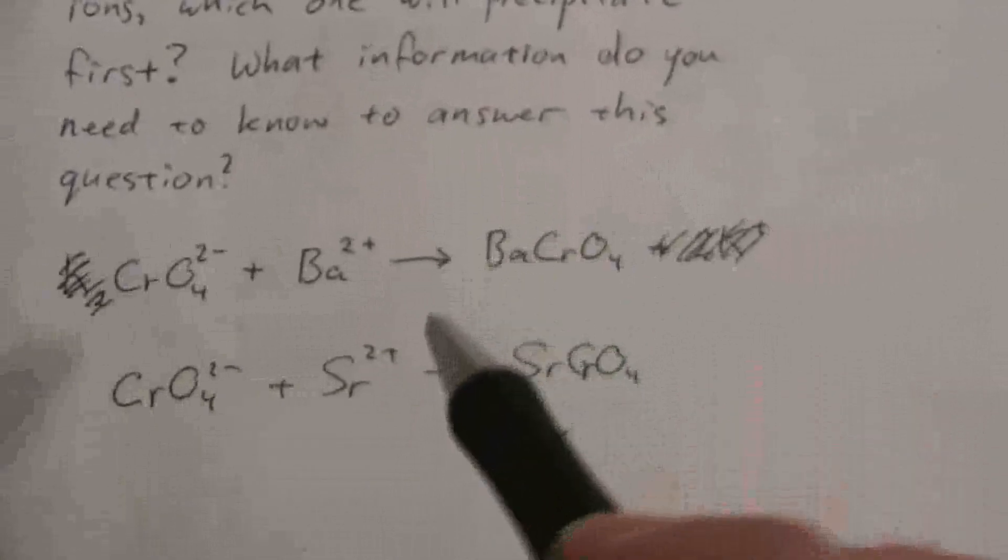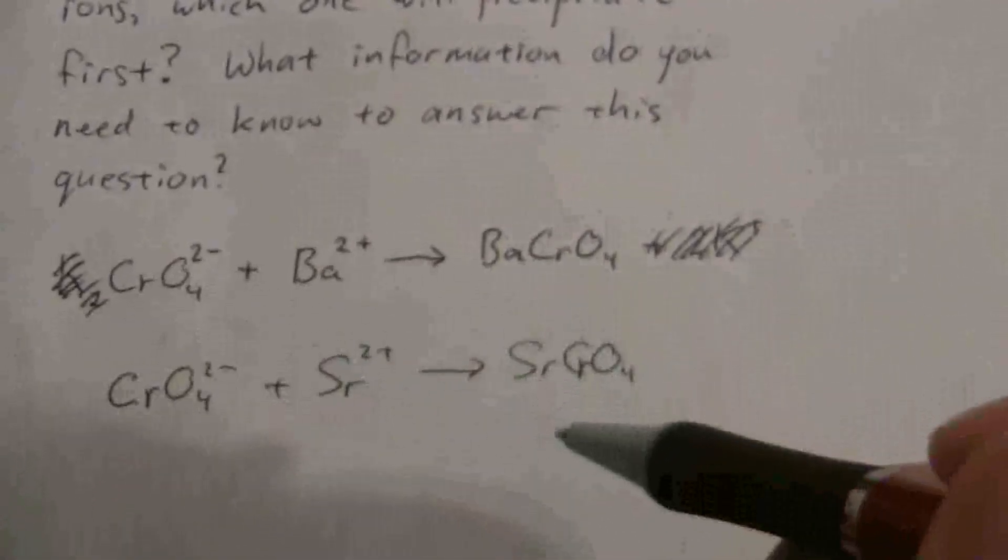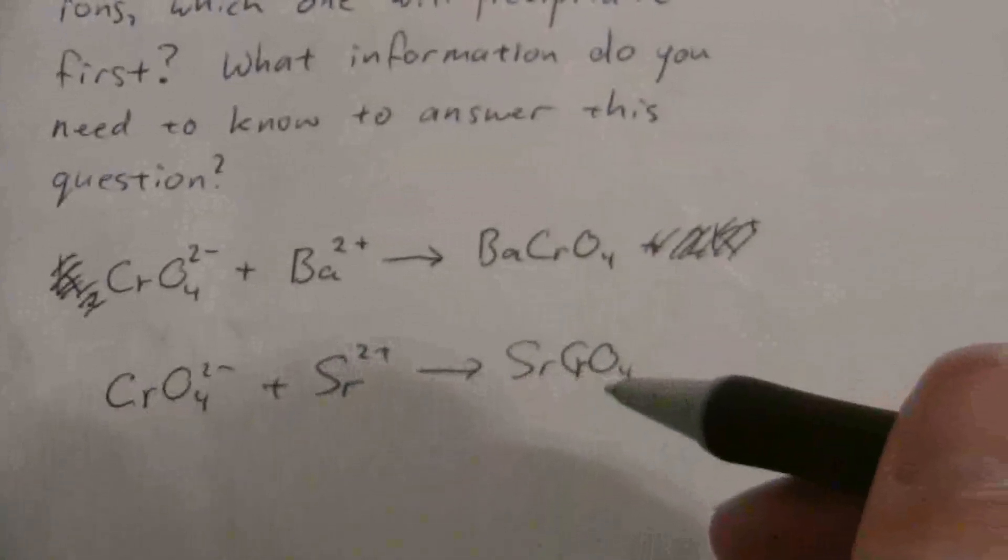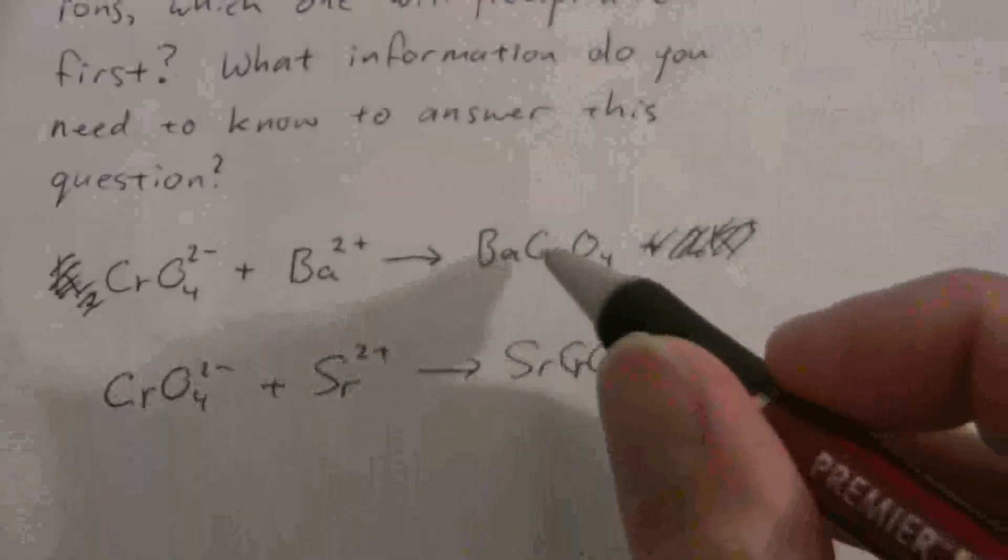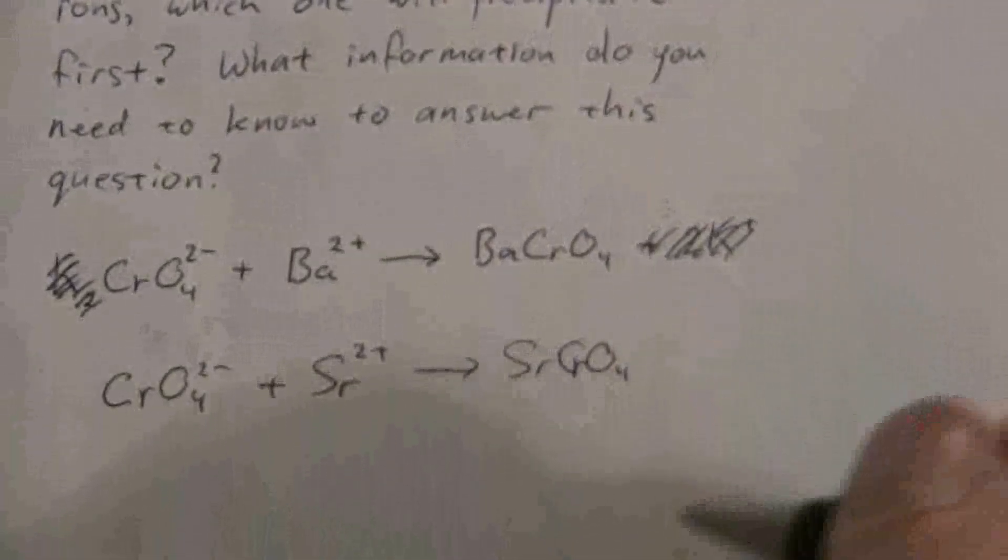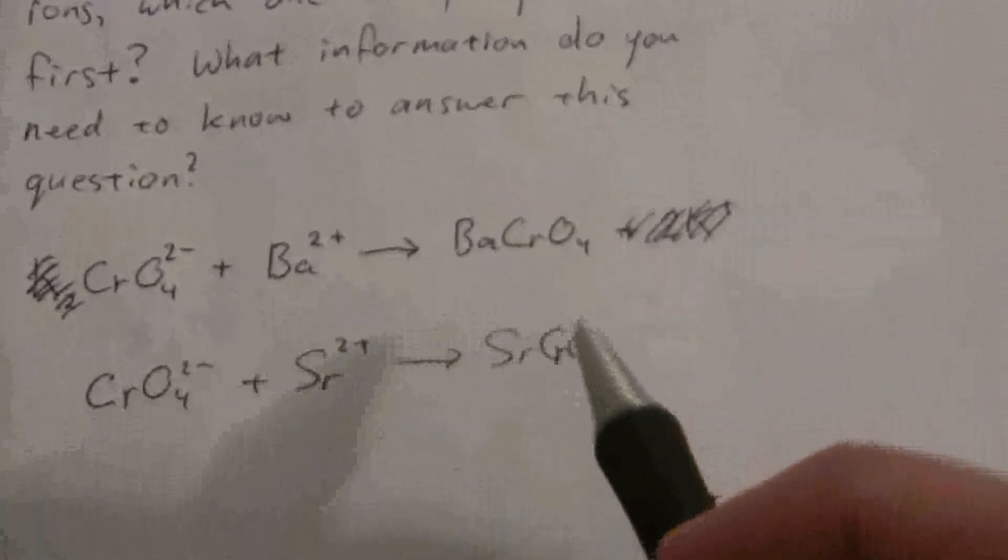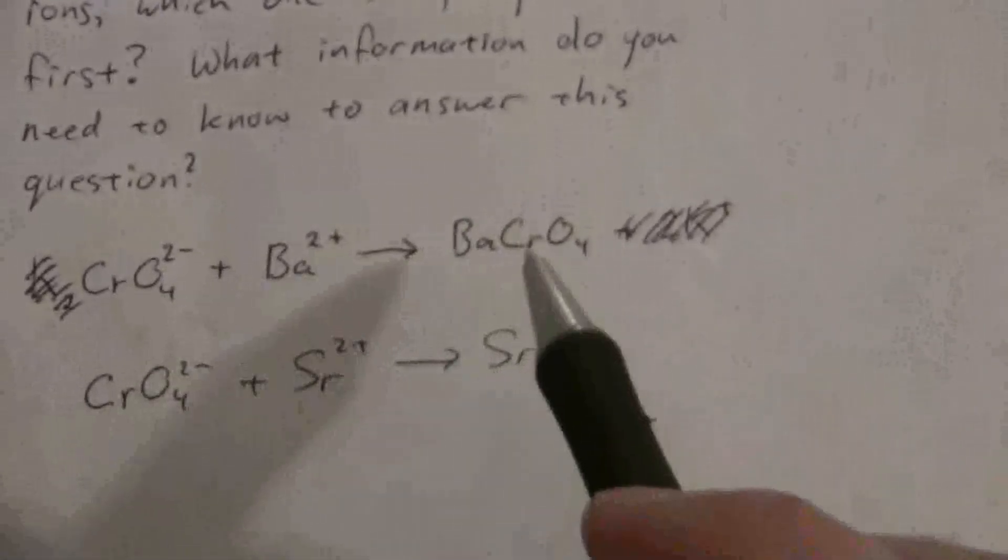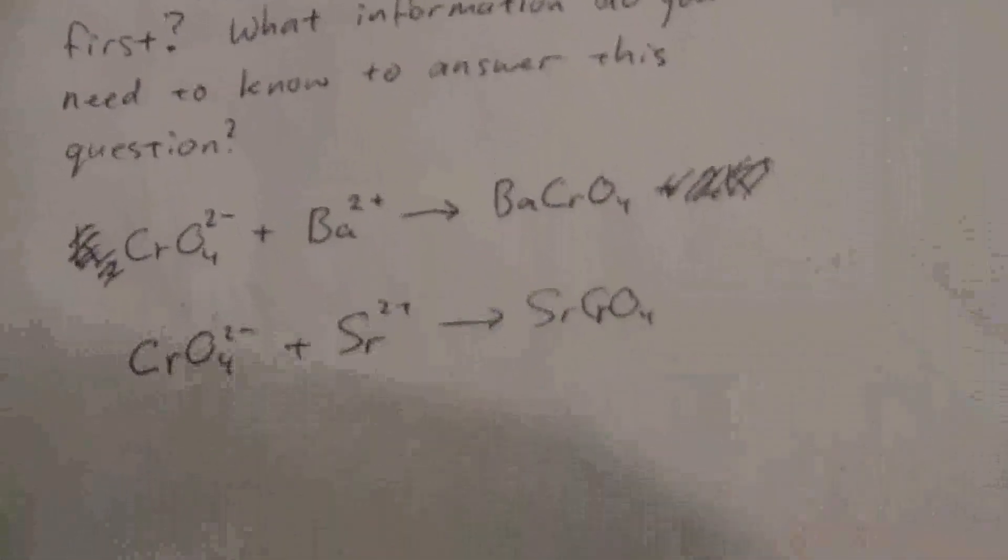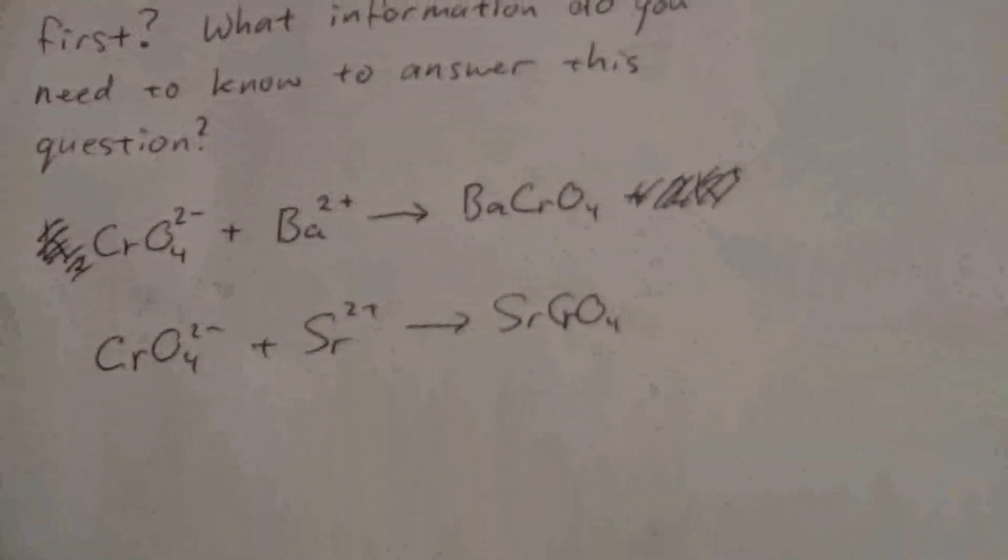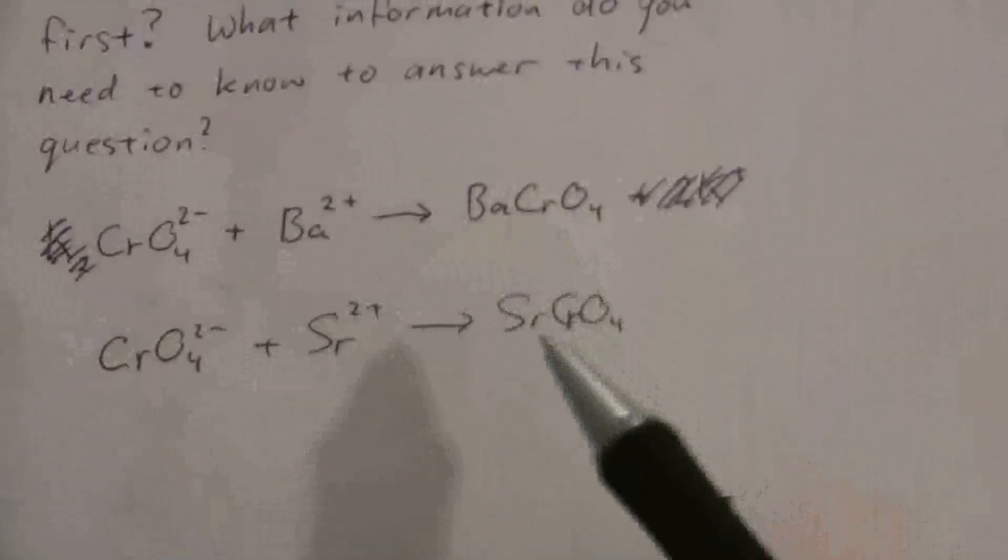The answer to that comes from which one is more soluble. The one that's more soluble is going to stay in solution longer than the one that is less soluble. So whichever one that is, it's going to be determined based on the solubility of that salt. So what we need to look up then is the solubility product for those two.